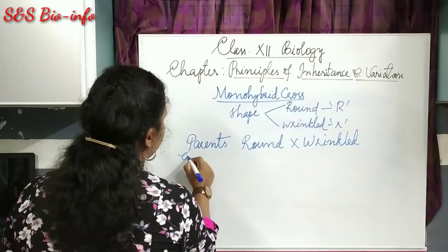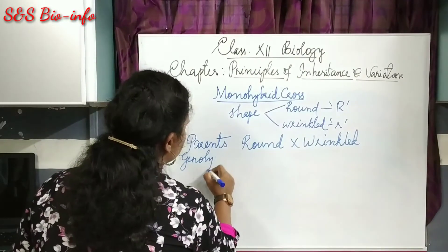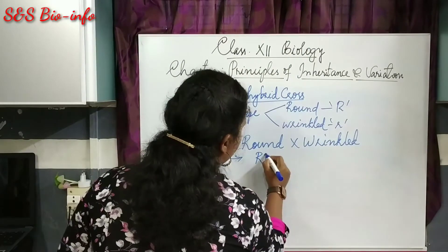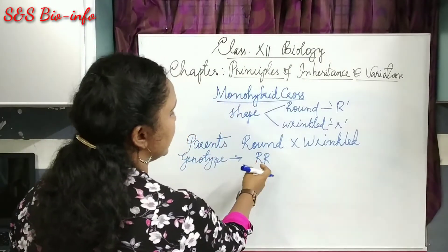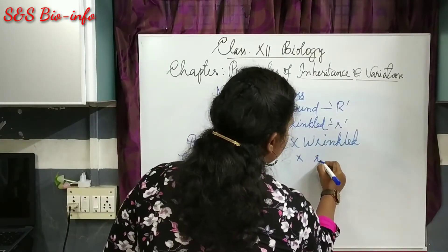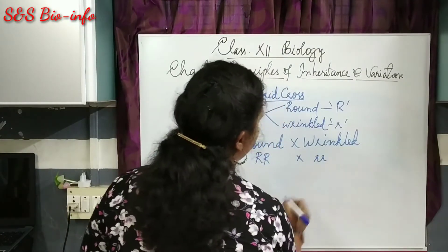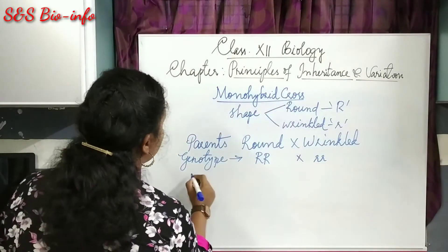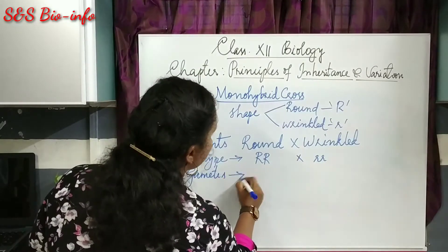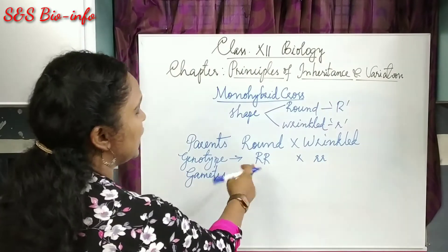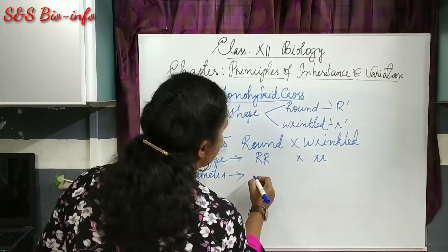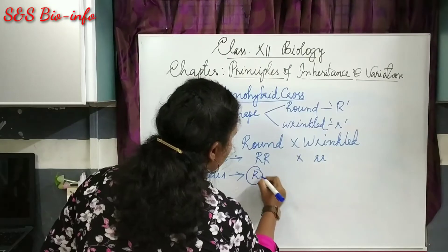The genotype of the parent can be written like this: capital RR for round, because a trait is controlled by a pair of alleles. Wrinkled is represented by using small rr. Then for gamete formation, gametes receive only one allele from each pair at the time of meiosis, so that is represented accordingly.